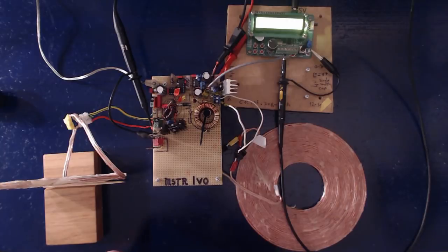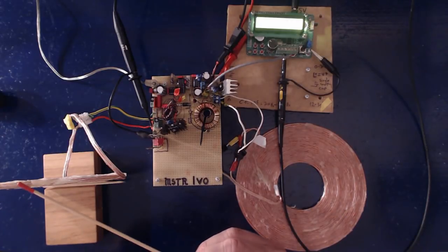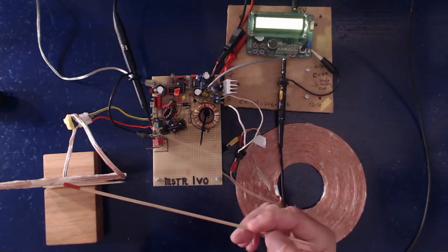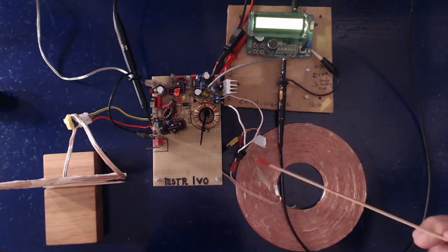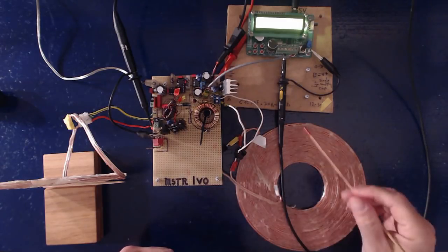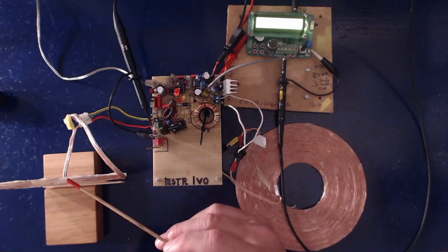This is my basic setup. I've got two bifilar pancake coils, equal size. This one is vertical because I don't want them to be magnetically coupled. This is the pulsed coil and this is the resonant coil.